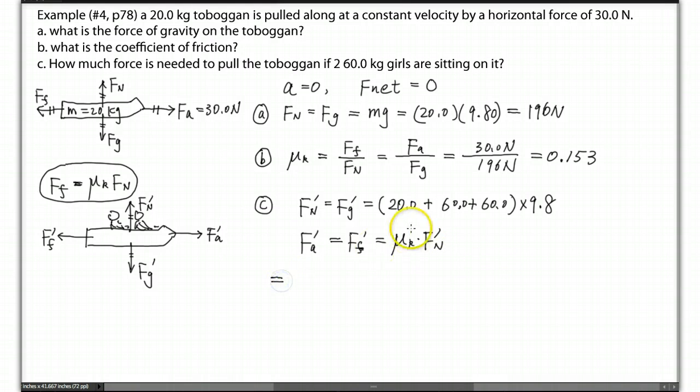Then we just plug in everything. So the mu k, we just used the mu k we found earlier, 0.153. And then times the Fn. Fn is right here, we didn't calculate, but we can put them together. So 120 plus 20, 140, 140.0 kg, times 9.8 m per second squared. So we'll put a zero here, make the three significant digits.